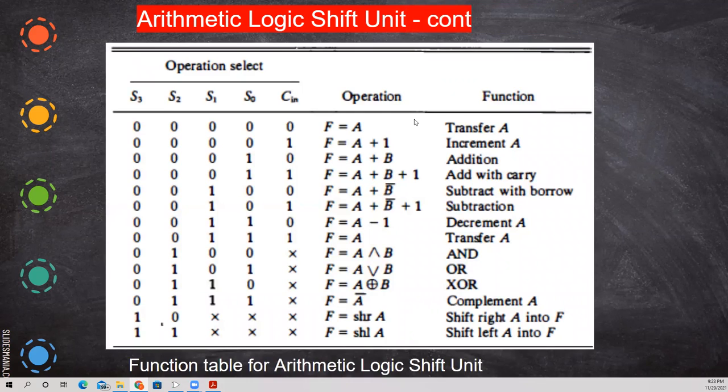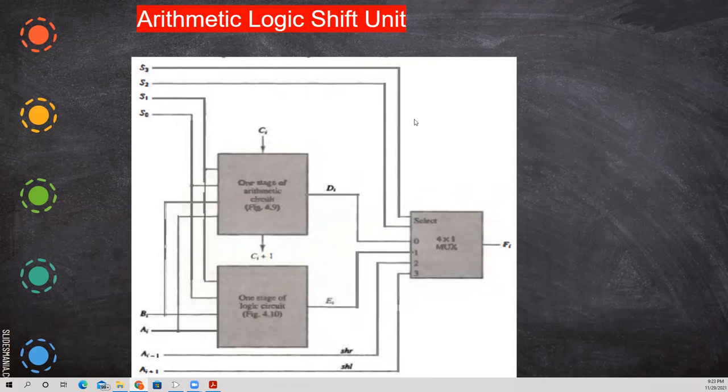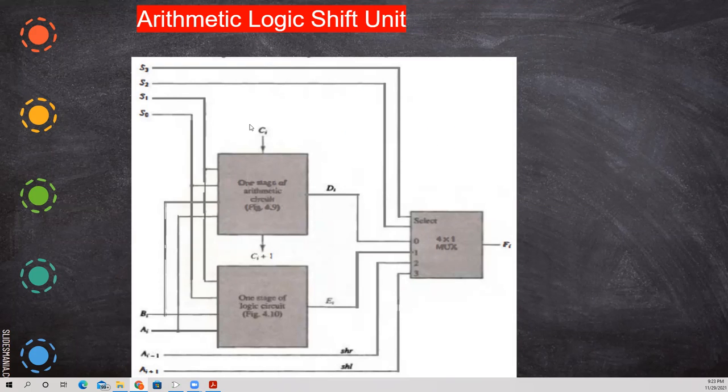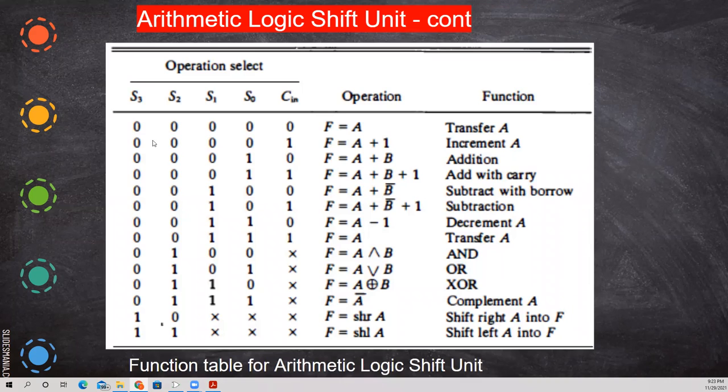Now if you see this function diagram, the excitation diagram, you can call the truth table as an excitation diagram also. So this is the function table. We have 4 select lines, 0, 0 and 1 carry in. So depends upon these combinations, the function is defined and the operation takes place. So all are 0 means and C is also 0, just transfer of data.